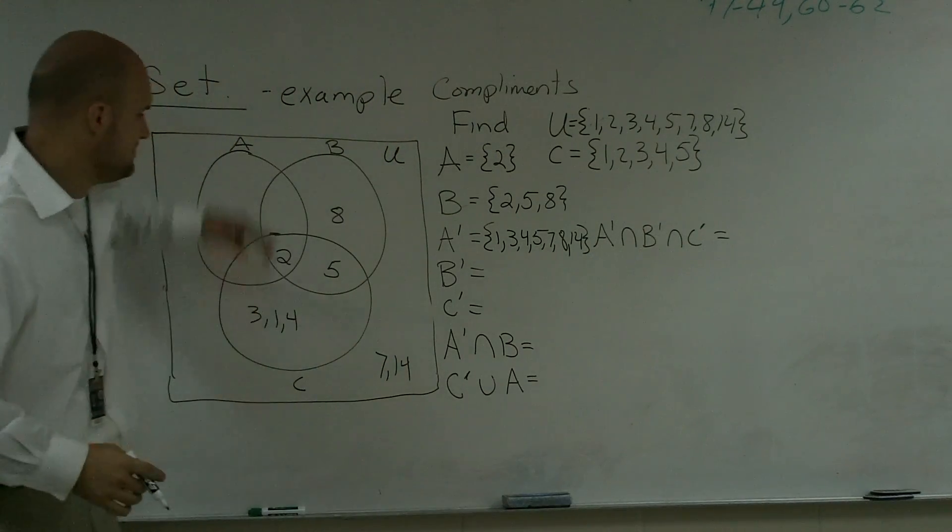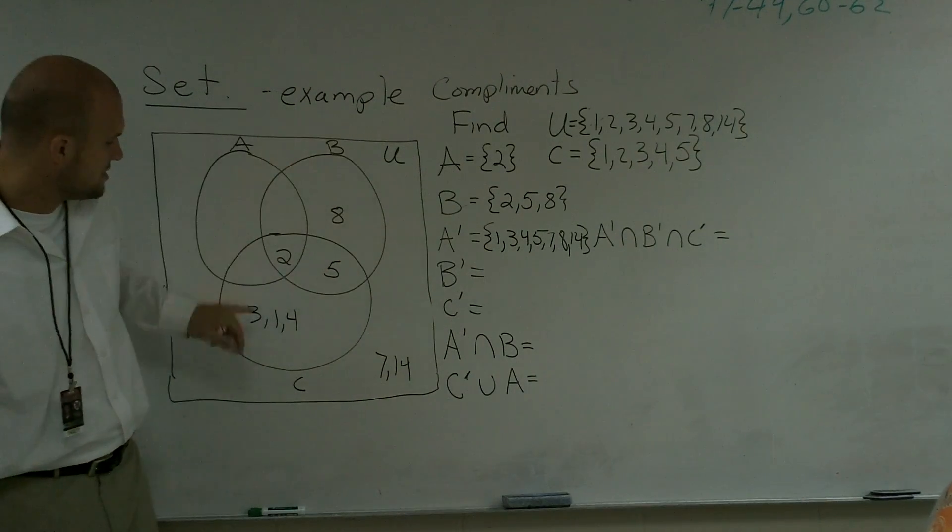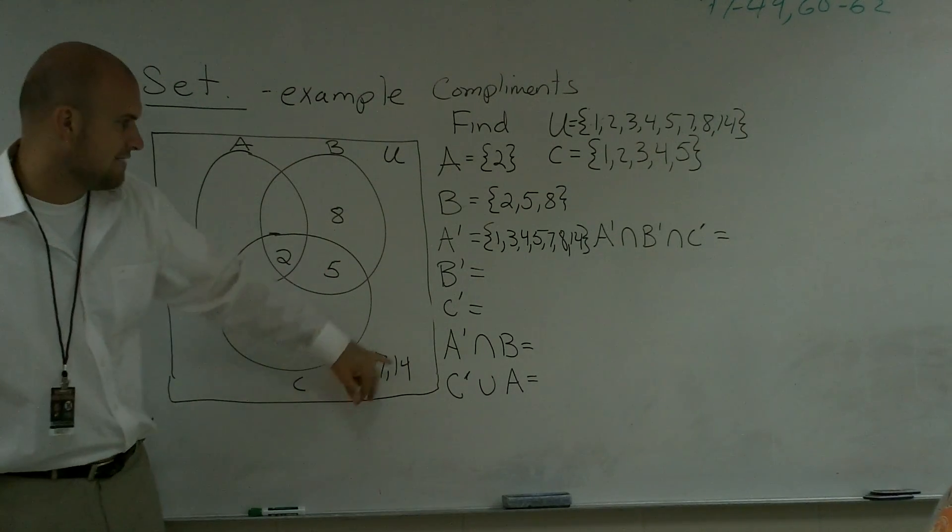All right, and if I was going to look at B prime, I'd say what's everything that's not in B but that's still in our universal set? So that would be 1, 3, 4, 7, and 14.